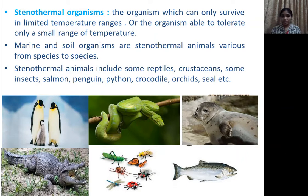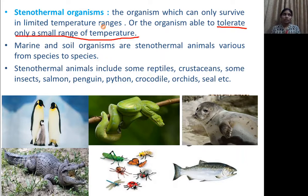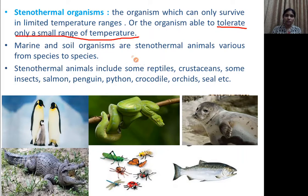The key difference to remember: stenothermal organisms can tolerate only a small range of temperature, while eurythermal organisms can tolerate a large scale of temperature variation. For example, humans are eurythermal — we can survive in winter, rainy season, and summer by protecting ourselves. Stenothermal animals cannot survive if there is even a small temperature fluctuation. These are the key points for the first abiotic factor: temperature.